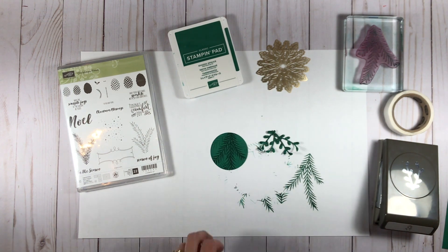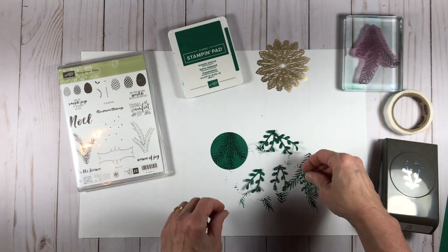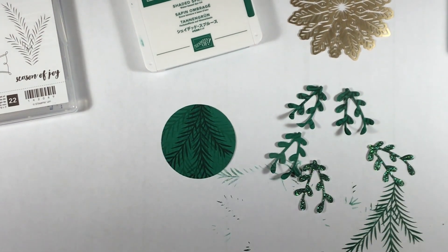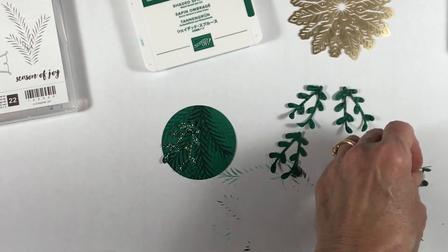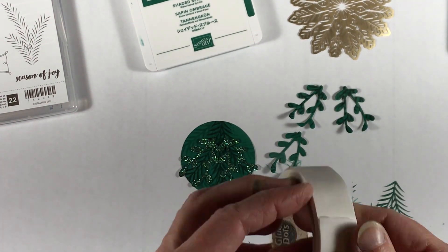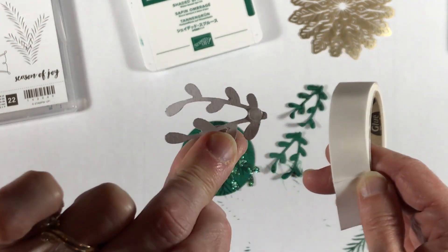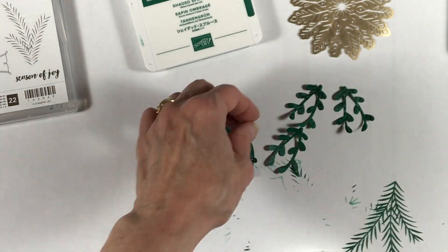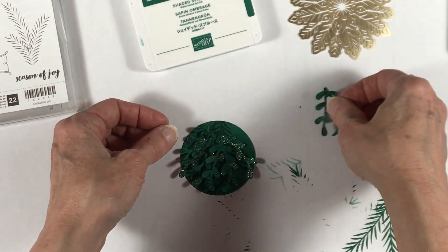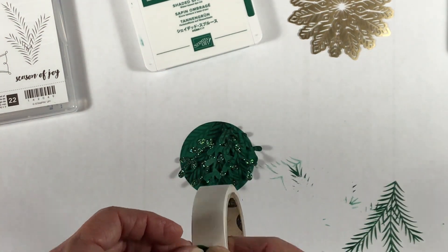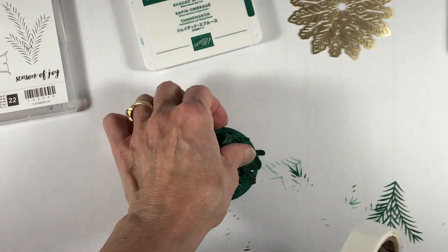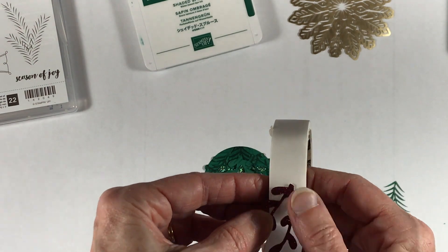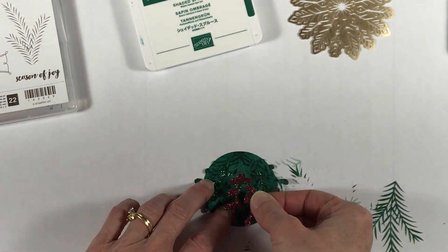And I'm also going to punch out the same sprig shape from a green glimmer piece of paper and also one in the red glimmer paper. So I'm kind of assembling my pieces there—I have three that are just on the regular Shaded Spruce cardstock, two on the green glimmer paper, and then of course I'll punch one out in the red in just a bit. So I'm basically building my embellishment starting with the two green glimmer sprigs, and I'm using glue dots to attach them. And now I'm attaching the three stamped Shaded Spruce sprigs, and now last but not least I'm going to attach the red sprig in the center on top of all the other pieces.